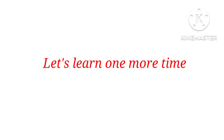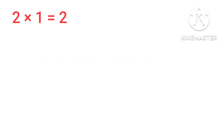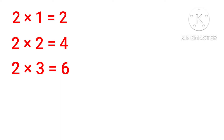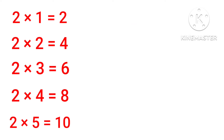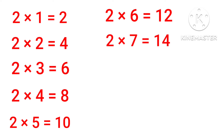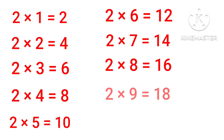Let's learn one more time. 2 1's are 2, 2 2's are 4, 2 3's are 6, 2 4's are 8, 2 5's are 10, 2 6's are 12, 2 7's are 14, 2 8's are 16, 2 9's are 18, 2 10's are 20.